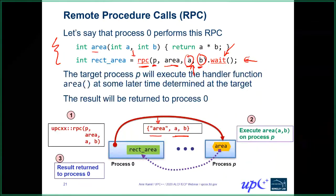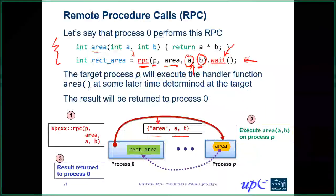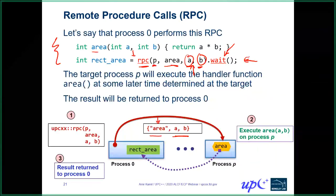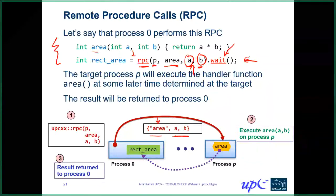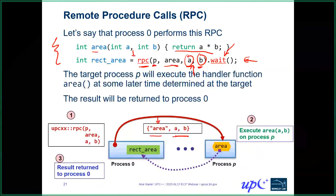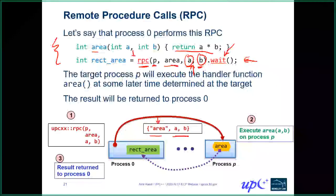Here we do have a return value, so the return value does get transferred back to process 0 after process P executes area. Whatever the product A times B is, it will get transferred back to process 0 once the function has been invoked.